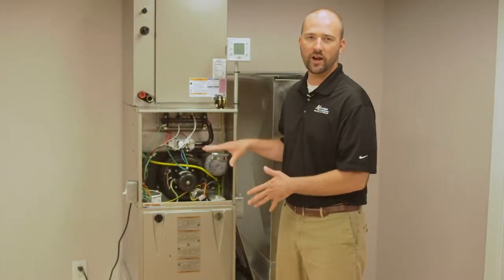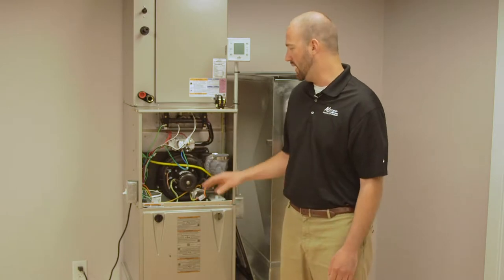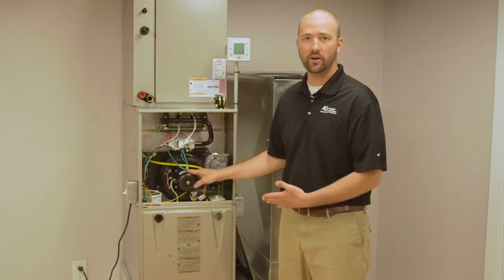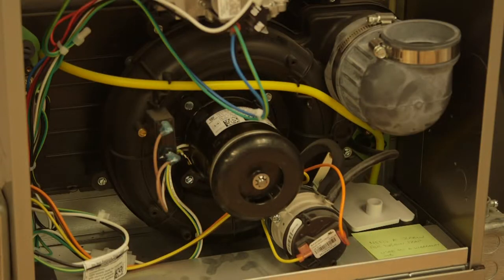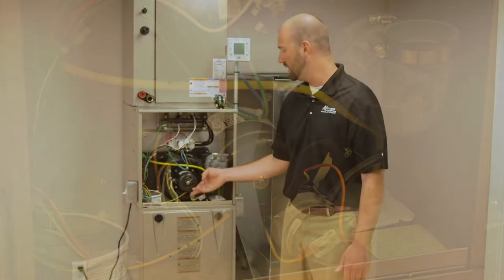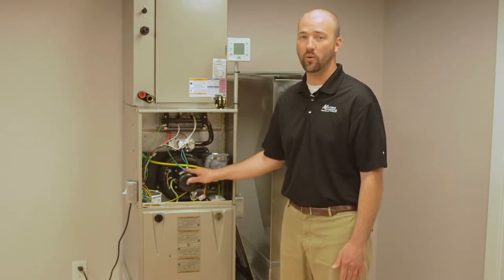Alright guys, the draft inducer motor is located in the top portion of your furnace box. This is a Carrier series furnace so it has a little plastic wheel on it here that indicates what this does. If it ever does break down, be careful not to touch this because sometimes it can get quite hot.